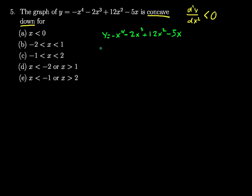To get to the second derivative, I start by taking the first derivative, so dy dx is equal to, bring the 4 out front, I have negative 4x cubed. Bring the 3 out, multiply the 3 and the 2, so I get minus 6x squared. Bring the 2 out front, I get plus 24x. And the derivative of negative 5x, I end up with just minus 5. That's the first derivative.